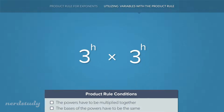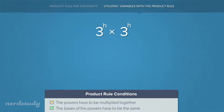Over here we have 3 to the exponent h multiplied by 3 to the exponent h. We don't need to get confused just because we see variables where the exponents are. All we have to think is: number one, we have two powers being multiplied together, and number two, the powers have the same base. Therefore we use the product rule. Of course, 3 to the exponent h plus h is equal to 3 to the exponent 2h.